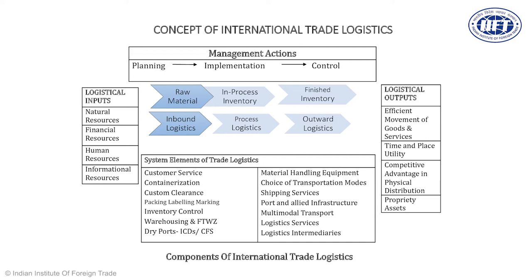Logistics basically combines four types: inbound logistics, process logistics, outward logistics, and reverse logistics. Inbound logistics may have logistical inputs such as natural resources, financial resources, human resources, and information resources, which are processed in the factory. Goods must move in an efficient and effective manner — there must be time and place utility. Goods must create a competitive advantage for the exporter in the international market and must become a proprietary asset. All these functions must have an element of planning, execution, and control. These are the management actions an exporter must take, even when using a third party — known as third party logistics.